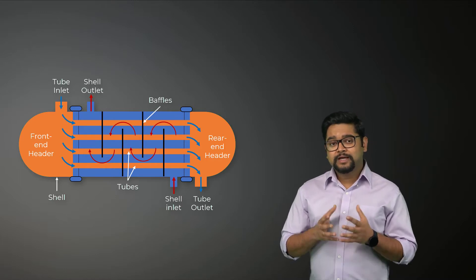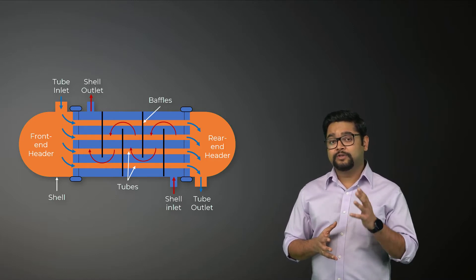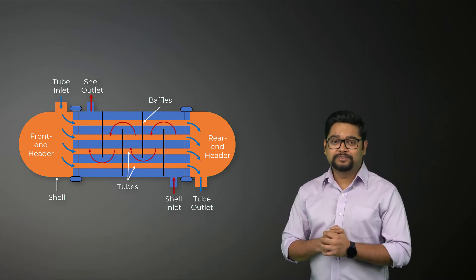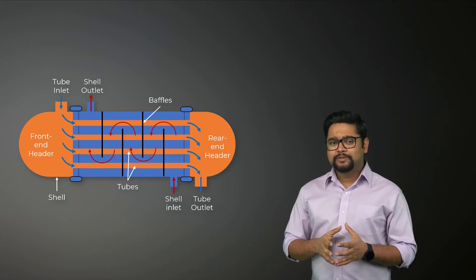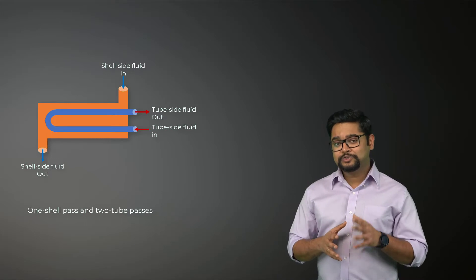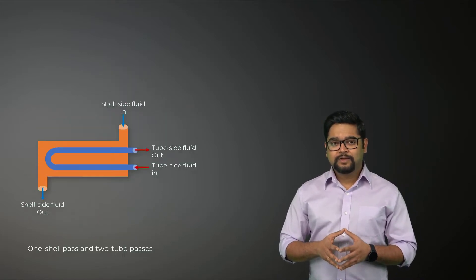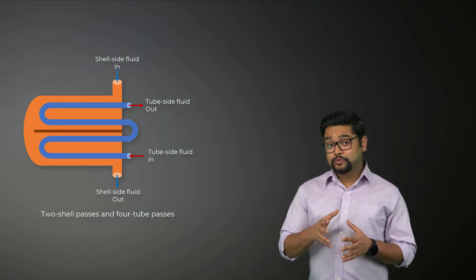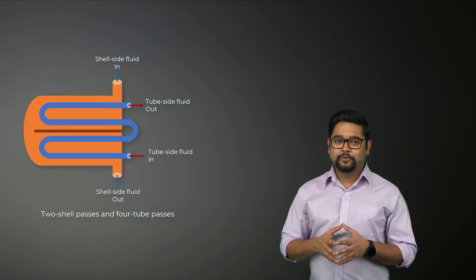Shell and tube heat exchangers can be further classified according to the number of shell and tube passes involved. For example, this configuration here represents one shell pass and two tube passes. And this one represents two shell passes and four tube passes.